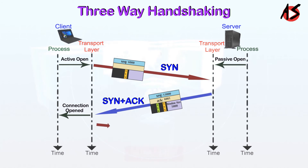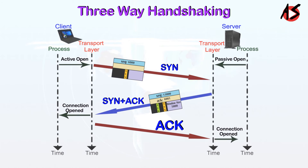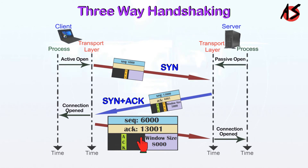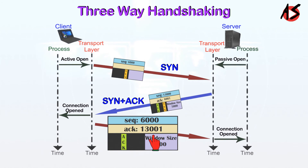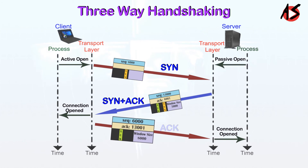At last, the client sends the third segment — an ACK segment. It acknowledges the receipt of the second segment with the ACK flag and acknowledgement number 13001. The sequence number in this segment is the same as in the SYN segment, 6000. The ACK segment does not consume any sequence number. The client must also define the server window size — suppose it is 8000. In general, the third segment usually does not carry data and consumes no sequence numbers.